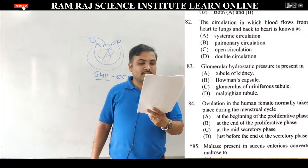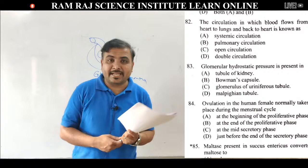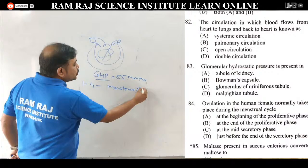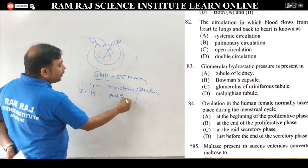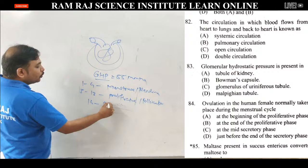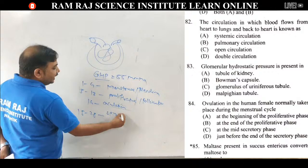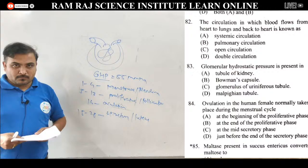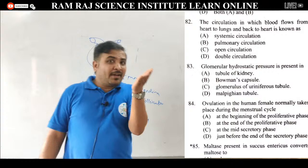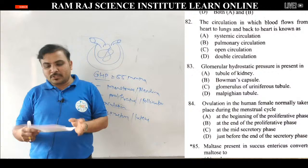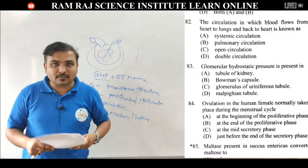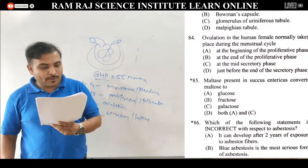Question 84: ovulation in human female normally takes place during the menstrual cycle. Menstrual cycle में: day 1-4 menstrual phase, day 5-13 proliferative (follicular) phase, 14th day ovulation, day 15-28 secretory (luteal) phase. Ovulation occurs on the 14th day — at the end of proliferative phase. Correct answer is — at the end of proliferative phase.